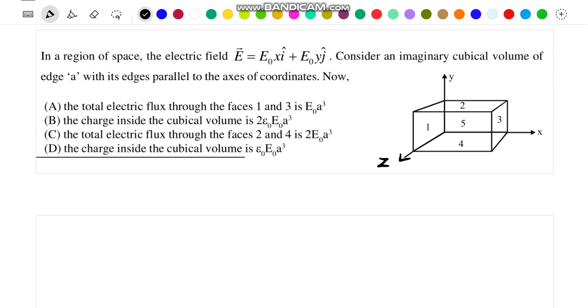Now we have to find the total flux through surfaces 1 and 3 as well as the charge enclosed inside the cubical volume. So let us check out of all the 4 possible options which options are correct.